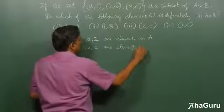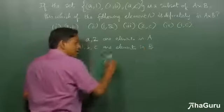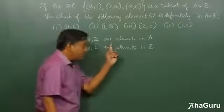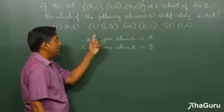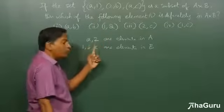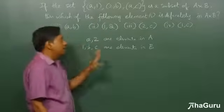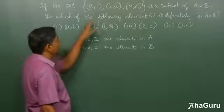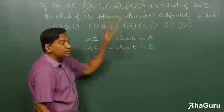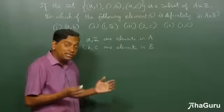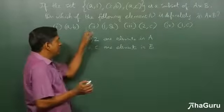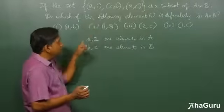Now these are not necessarily the only elements—there can be more elements in A, more elements in B—but definitely this must be there because that's what this being a subset of A×B means. Because A×B has all the elements such that the first element is part of set A and the second element is part of set B.